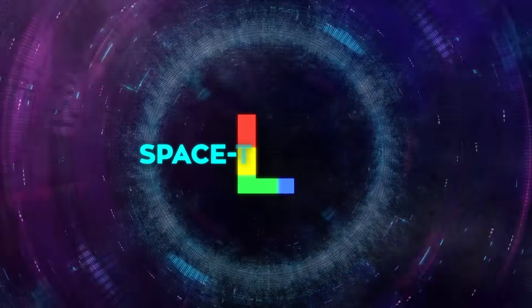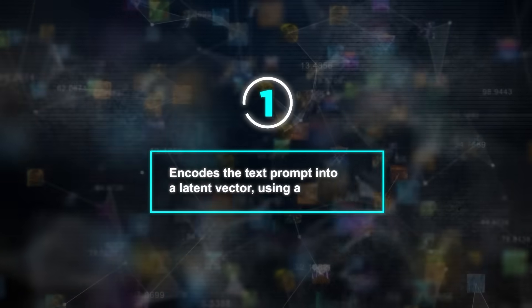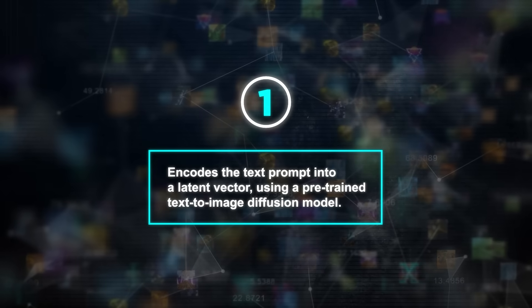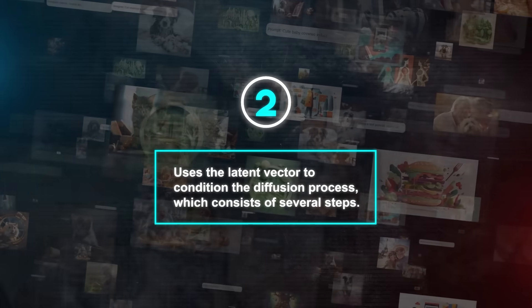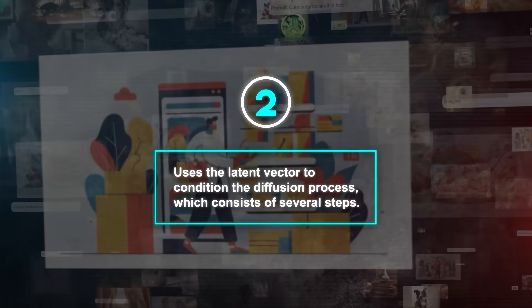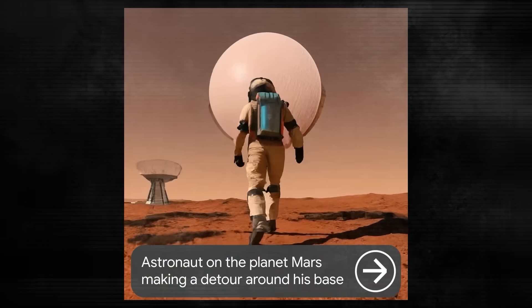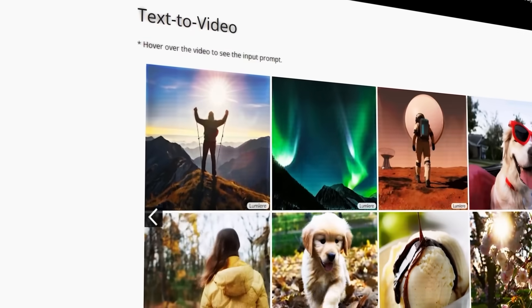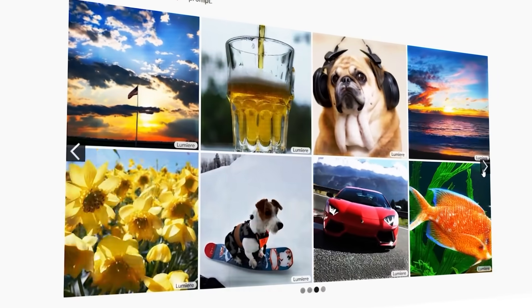The model uses the Spacetime U-Net architecture to generate videos from text in a diffusion-based manner. It first encodes the text prompt into a latent vector using a pre-trained text-to-image diffusion model, then uses the latent vector to condition the diffusion process, which consists of several steps. In each step, Lumiere applies the Spacetime U-Net to the noisy video and produces a slightly less noisy video, repeating this process until the final video is generated, which matches the text prompt.